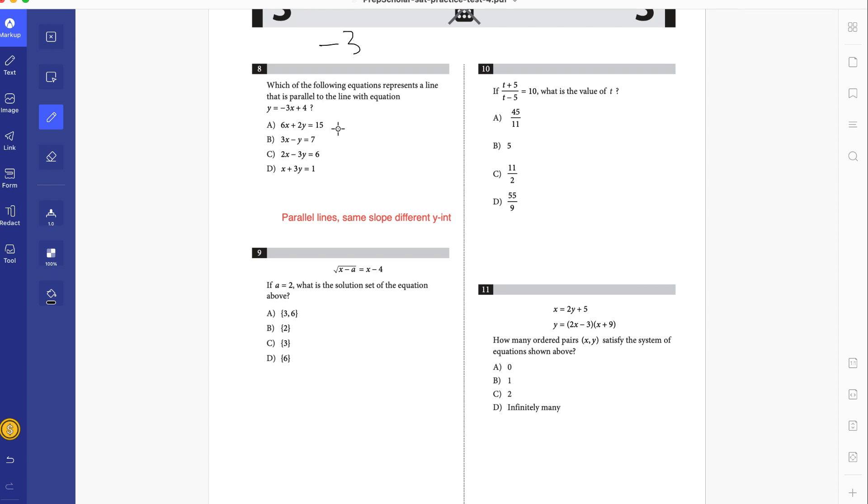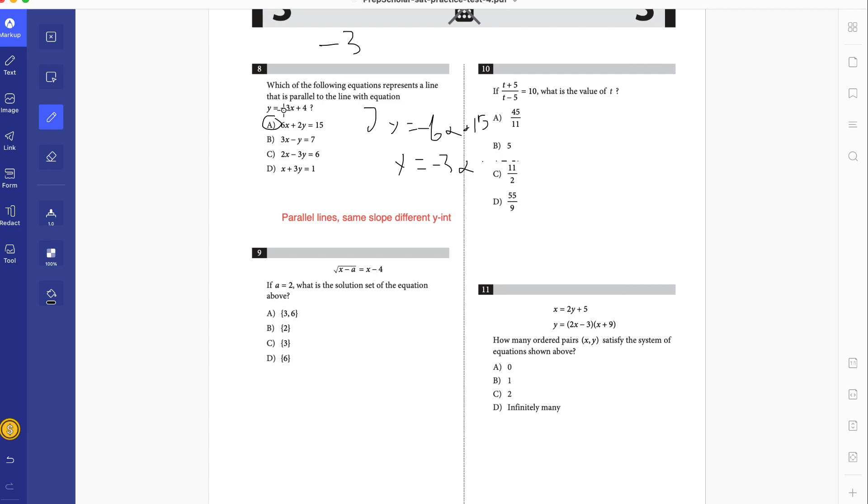So we're trying to find which equation has a slope of negative 3. For this equation, we have 2y equals negative 6x plus 15. Divide by 2, you get y equals negative 3x plus 15 over 2. We don't care about that. All we know is we got the negative 3 slope. So we're done. A is the answer.